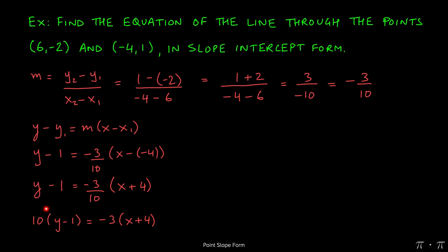At this stage, we can distribute the 10 into the left-hand side, and that will give us 10y minus 10 equals the right-hand side, where we can distribute the -3. Negative 3x minus 12.